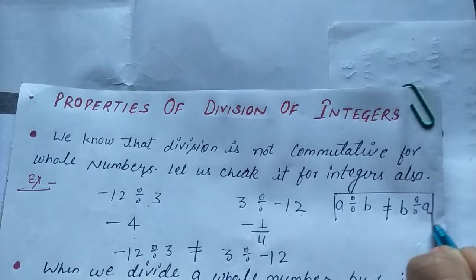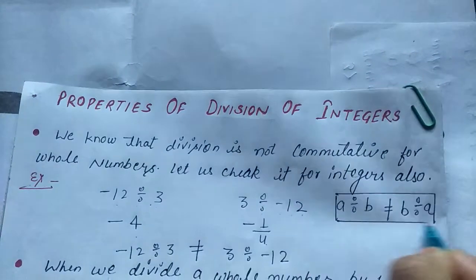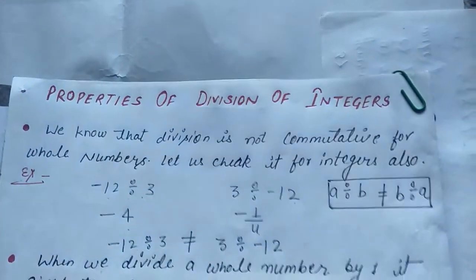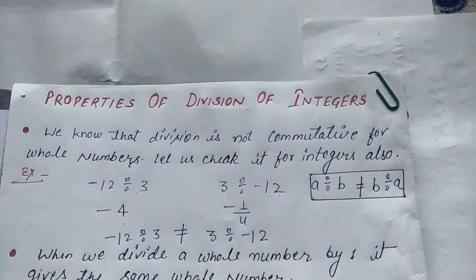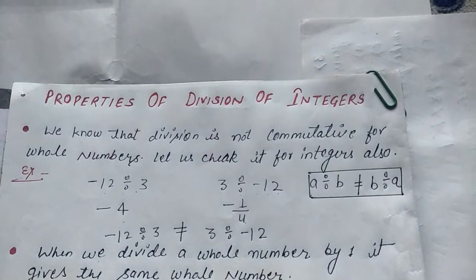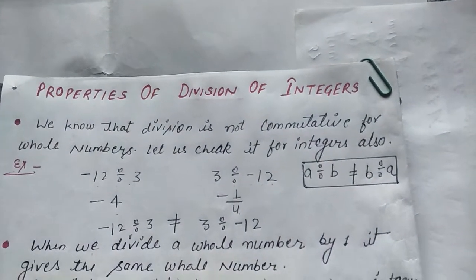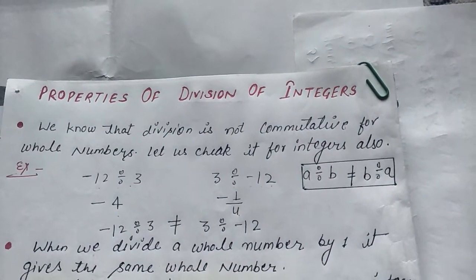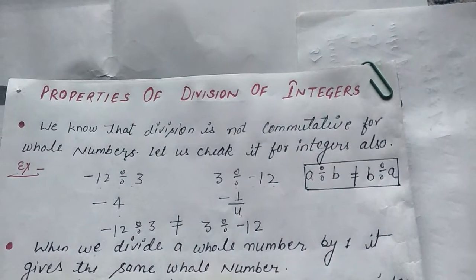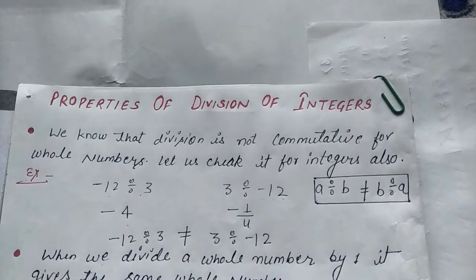Toh commutative property integers ke liye use nahi hoti hai. So we can say that division is not commutative for integers.